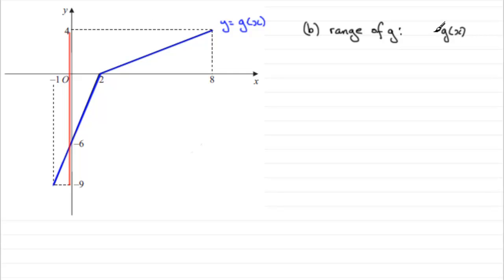It would be g of x is greater than or equal to minus 9 but less than or equal to 4. Between minus 9 and 4.